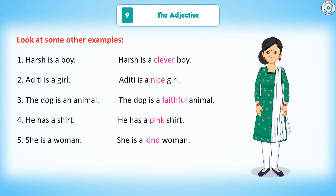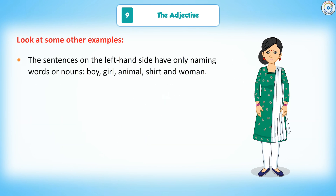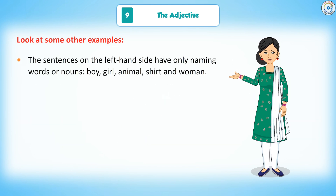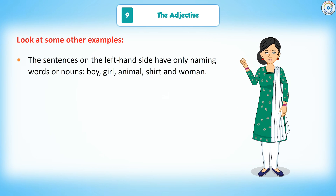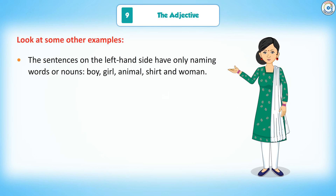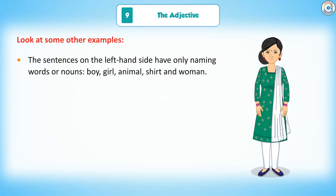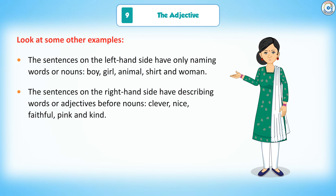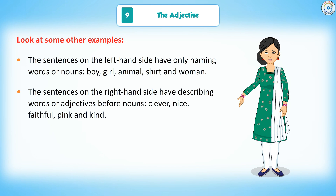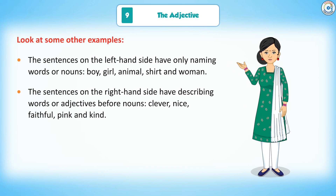5. She is a woman. She is a kind woman. The sentences on the left-hand side have only naming words or nouns: boy, girl, animal, shirt, and woman. The sentences on the right-hand side have describing words or adjectives before nouns: clever, nice, faithful, pink, and kind.